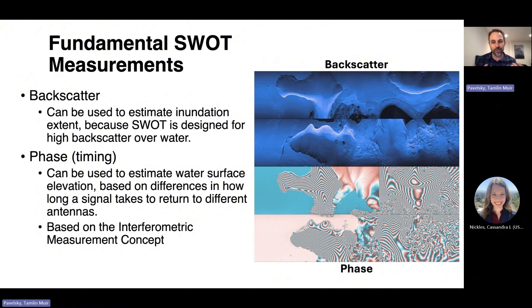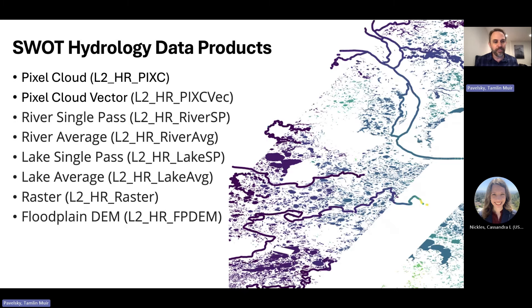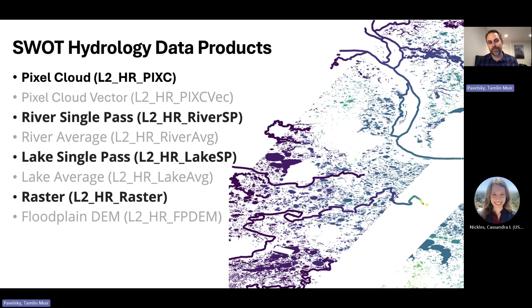If you're a hydrologist interested in using data products, you're probably not super interested in raw backscatter and phase — you might be more interested in something like water surface elevation or inundation extent. It turns out we have eight different data products specifically designed to help with hydrology, and I'm going to focus on just four: the pixel cloud, the river single pass, the lake single pass, and the raster data product.